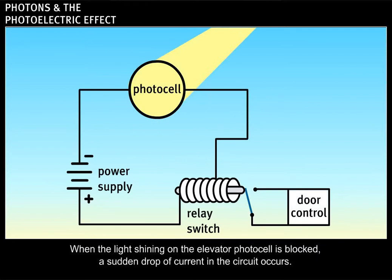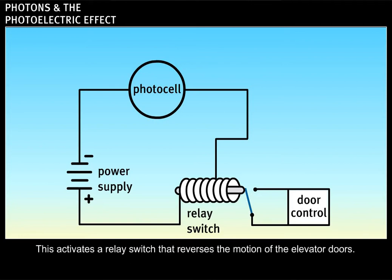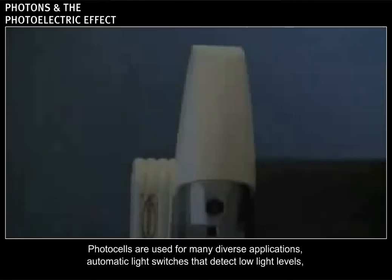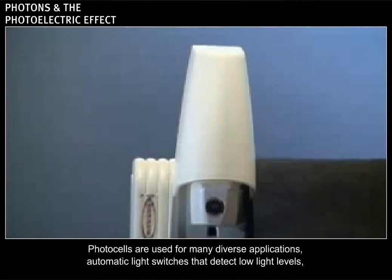When the light shining on the elevator photocell is blocked, a sudden drop of current in the circuit occurs. This activates a relay switch that reverses the motion of the elevator doors.